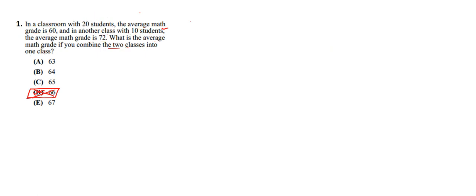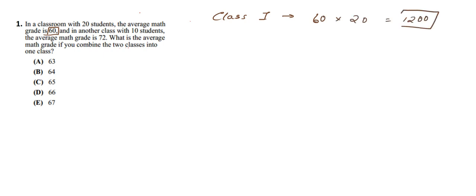First we need to calculate the total marks, then calculate the average from that. In Class 1 with 20 students and an average grade of 60, the total marks will be 60 times 20, which is 1200. In Class 2 with 10 students and an average of 72, we get 72 times 10, so the total marks of 10 students is 720.